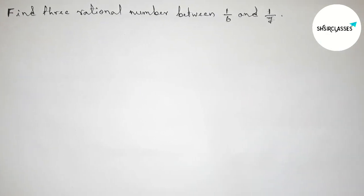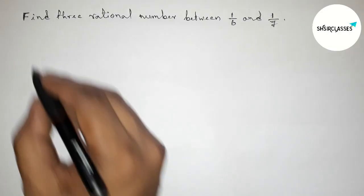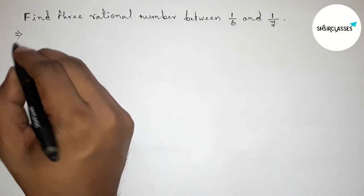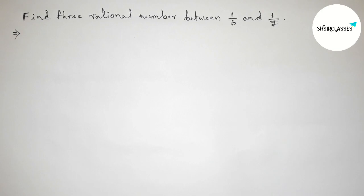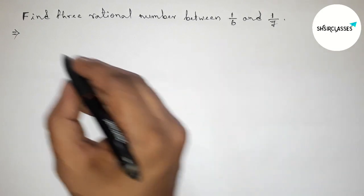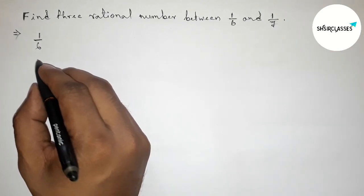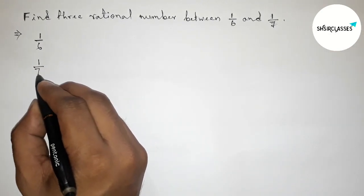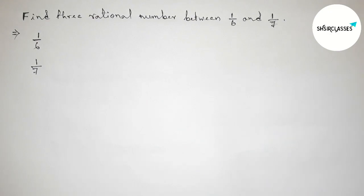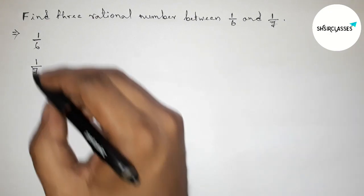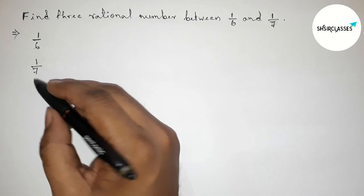First of all, let us solve this problem. Here, the first rational number is 1/6 and the second one is 1/7. Both the denominators are not the same, so first we have to make equal denominators.